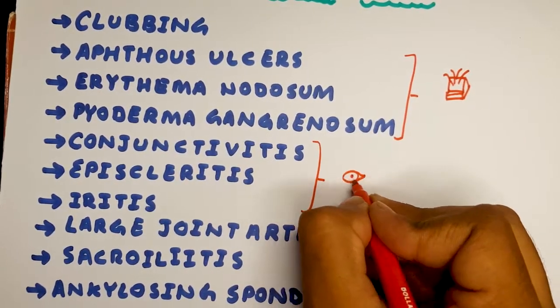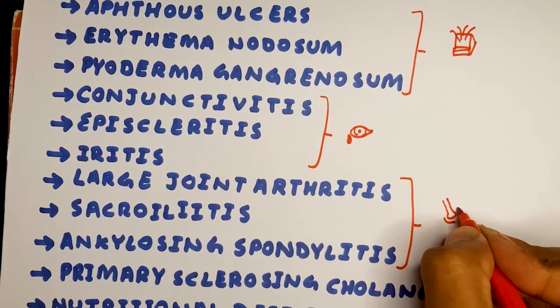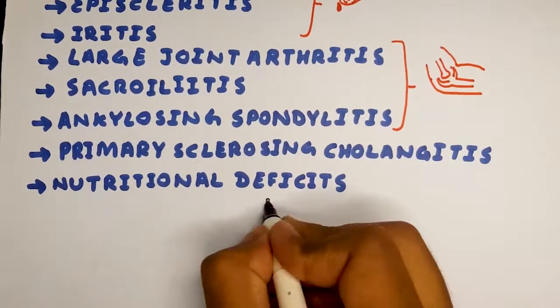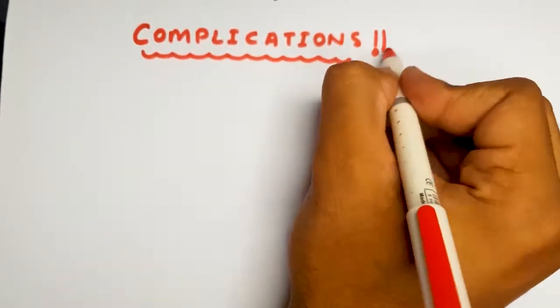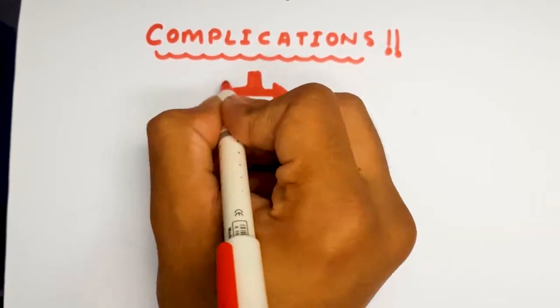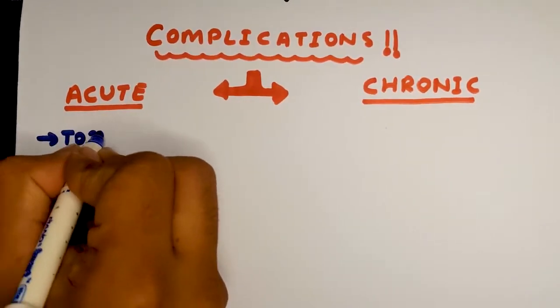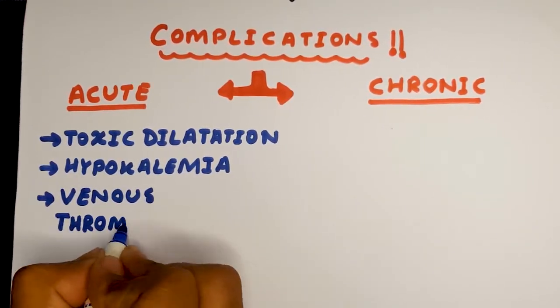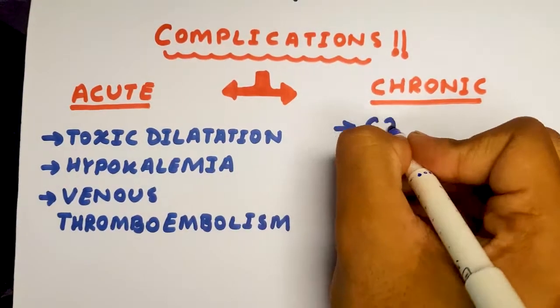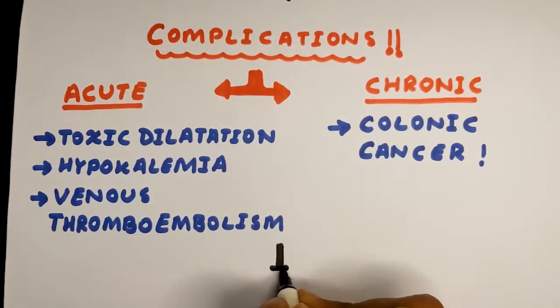You can remember all of these by grouping them into skin changes, eye changes, and joint changes. If this goes untreated, it may complicate into acute and chronic problems like toxic dilatation, hyperkalemia, and venous thromboembolism, and eventually they'll form colonic cancer.